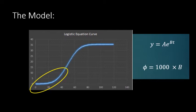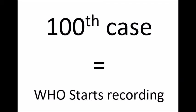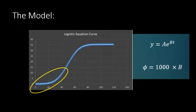Let me explain how those numbers are recorded. The World Health Organization records those numbers from the 100th recorded infection. So when you have 100 people infected, the statistics start for the World Health Organization. After this modeling, we have b — the number that expresses the growth. I will multiply b by 1,000 and obtain this number phi. This number gives us some explanation about the growth of cases occurring in each country or region we are studying.